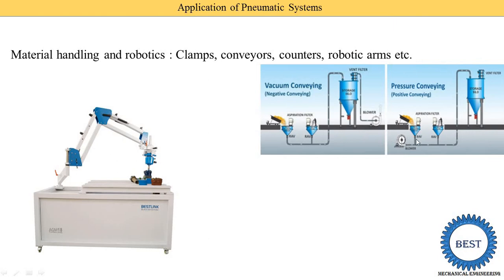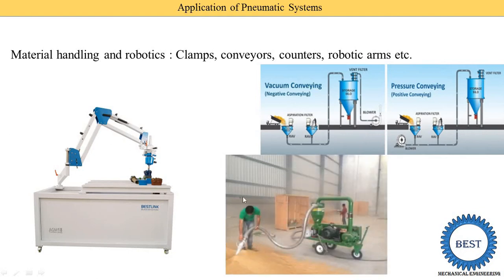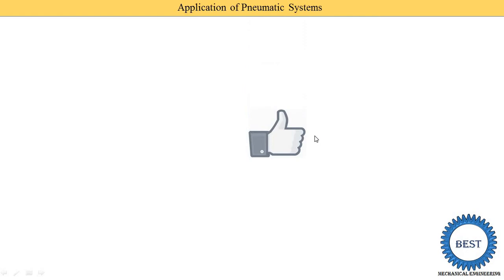In the pressurized system, the blower is placed at the inlet side, creating pressure so that material is transferred from one place to a tank. You can also see another image where in agriculture, material is directly transferred from one side to another by using compressed air, a compressor, or pneumatic systems.